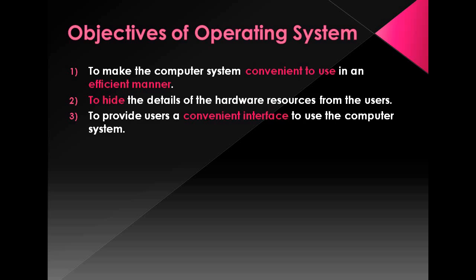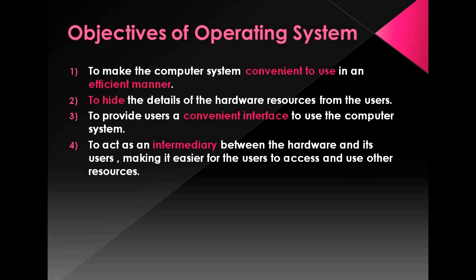The third objective of the operating system is to provide users a convenient interface to use the computer system. Fourth objective: to act as an intermediary between the hardware and its users, making it easier for the users to access and use other resources. Fifth objective: to manage the resources of a computer system.